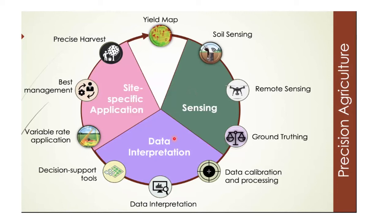The second step is data interpretation. From the sensing step, we collected a lot of data. Data itself is nothing until we use it, so the next step is calibration, processing, and using data as a decision support tool — this data supports us in making decisions. The third and last step is decision making, which means site-specific application: variable rate application, best management practices, and precise harvesting.